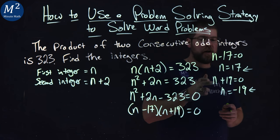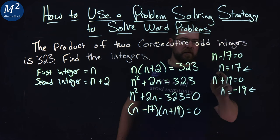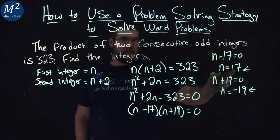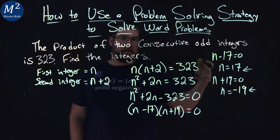Now they're going to be consecutive odd integers, so let's go test that out. n equals 17, let's go test that first one out. If n equals 17, that means the next consecutive odd integer would be 19.